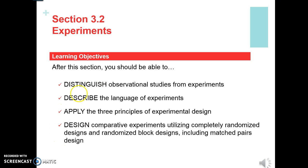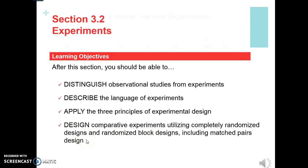When you're done with this section, you should be able to understand the difference between observational studies and experiments, and describe the language of experiments. This is a very vocabulary-heavy section, and you really want to make sure you understand the difference between the language of experiments and sampling, because it's very important to keep them separate. There are three important principles of experimental design, and you'll be able to design an experiment using completely randomized design, randomized block design, and a matched pairs design.